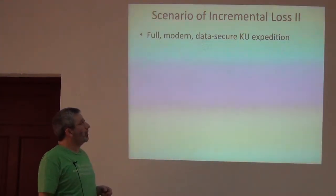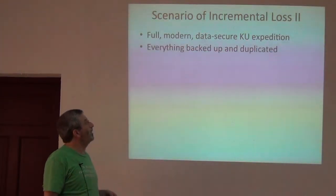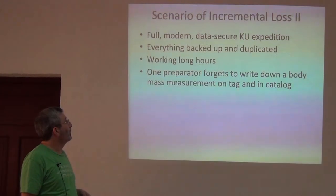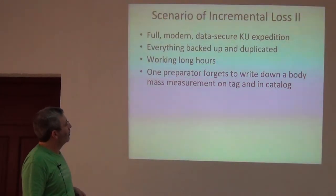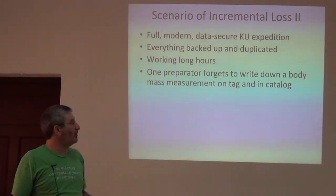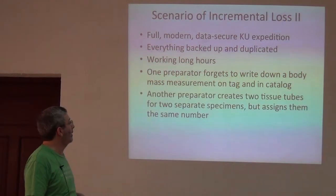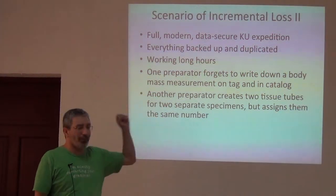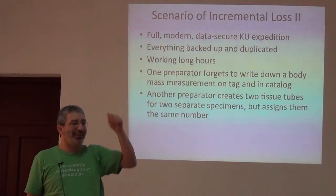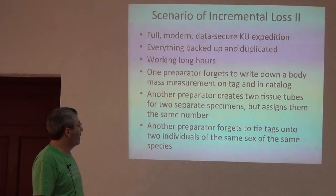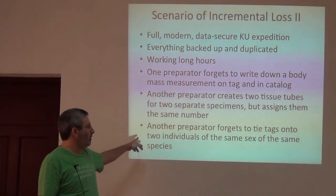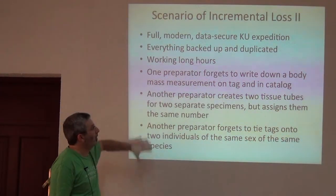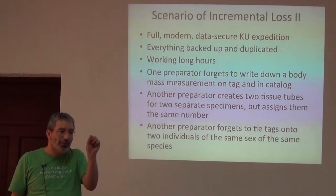A full modern data-secure KU expedition goes out — everything was backed up and duplicated. We were working long hours. One preparator forgot to write down a measurement of body mass on both the tag and the catalog. Another preparator created two tissue tubes for two separate specimens of the same species and assigned them the same number. Another preparator forgot to tie tags on two individuals of the same sex of the same species. Each of those caused incremental loss — just a little bit.